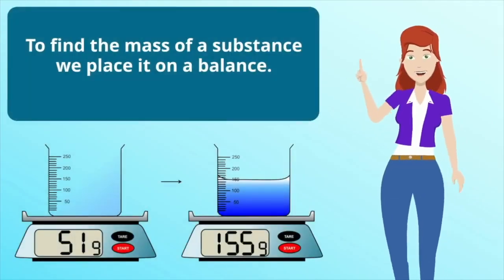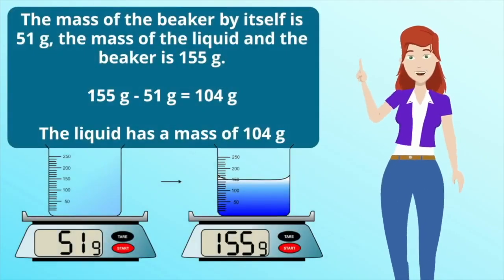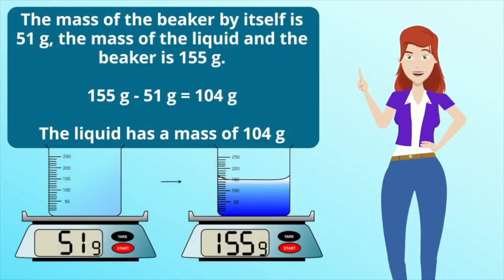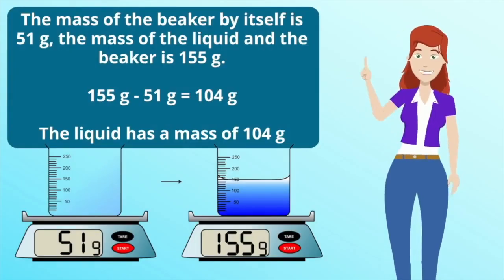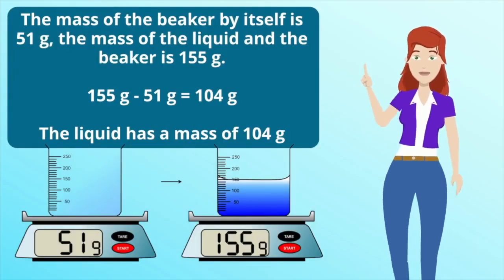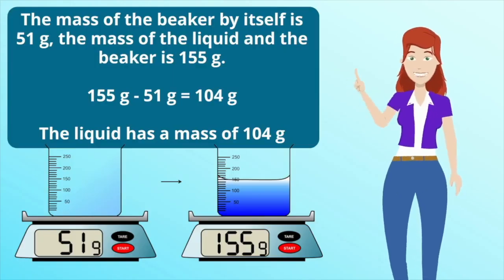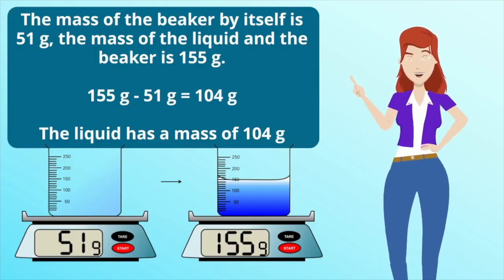To find the mass of a substance, we place it on a balance. The mass of the beaker by itself is 51 grams. The mass of the liquid and the beaker is 155 grams. 155 minus 51 equals 104 grams. So the liquid has a mass of 104 grams.